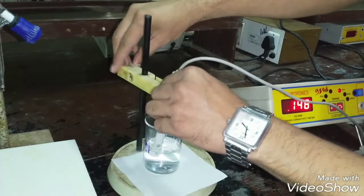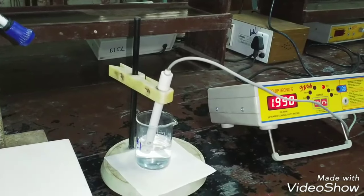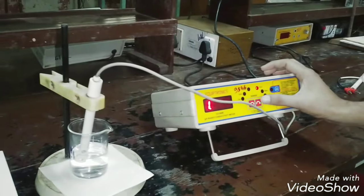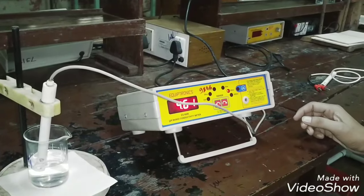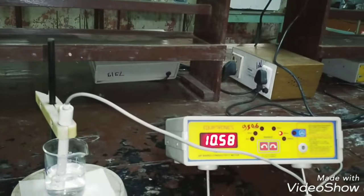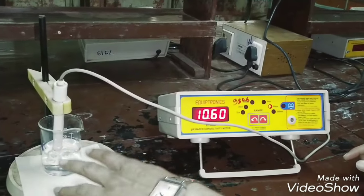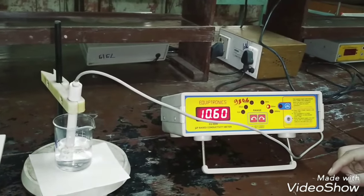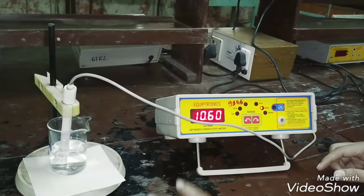Initially the conductivity of HCl is very high because the HCl is highly ionized acid. The HCl is highly ionized acid and in solution it forms H+ and Cl- ions.